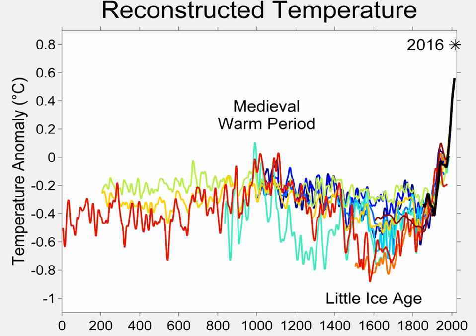Ocean water is mostly H2-16O, with small amounts of HD-16O and H2-18O, where D denotes deuterium, i.e. hydrogen with an extra neutron. In Vienna Standard Mean Ocean Water (VSMOW), the ratio of D to H is 155.76 × 10⁻⁶ and O-18 to O-16 is 2005.2 × 10⁻⁶. Isotope fractionation occurs during changes between condensed and vapor phases. The vapor pressure of heavier isotopes is lower, so vapor contains relatively more of the lighter isotopes, and when the vapor condenses, the precipitation preferentially contains heavier isotopes.